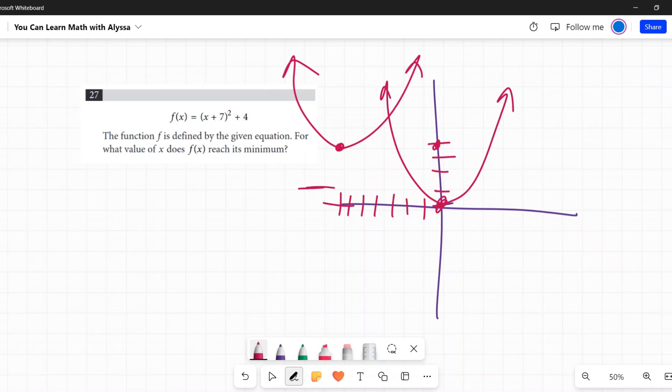So the function f is defined by this given equation, which I've done a very rough drawing. Again, we're just sketching it out quickly so we have something to look at. For what value of x does f of x reach its minimum? Well, there's our minimum right there, our vertex. What is the coordinate? Well, x comes first and we went negative 7 on x and we went up 4. So that's negative 7, 4. And they're asking, what is the value of x? The value of x there is negative 7.